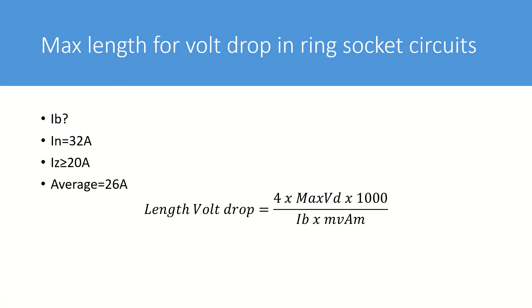So the equation can be carried out as follows. The max volt drop which will be 11.5 multiplied by four multiplied by a thousand and then divided by the design current which will be 26 amps multiplied by millivolts per ampere per meter.